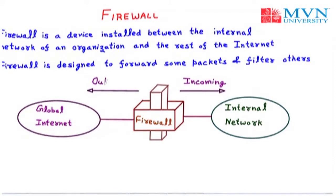At the back side of the firewall to the global internet, we are having the outgoing packets. So the firewall may act as a filter and it protects the internal network from the global internet — the worldwide people. The internal network may be any LAN, may be a company, may be any organization which we want to protect from the outside world.